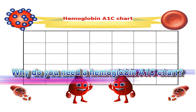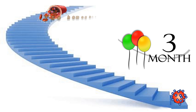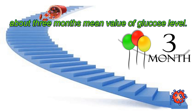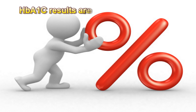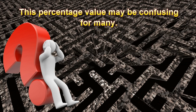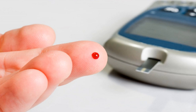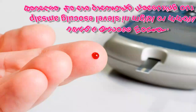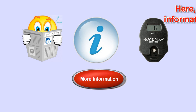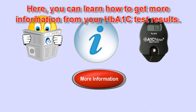Why do you need a hemoglobin A1C chart? The hemoglobin A1C result is an important value for long-term glucose monitoring, representing about a 3-month mean value of glucose level. HbA1C results are given as a percentage value, which may be confusing for many, because we are used to measuring plasma glucose levels in mg per deciliter or millimoles per liter using a glucose monitor. Here you can learn how to get more information from your HbA1C test results.